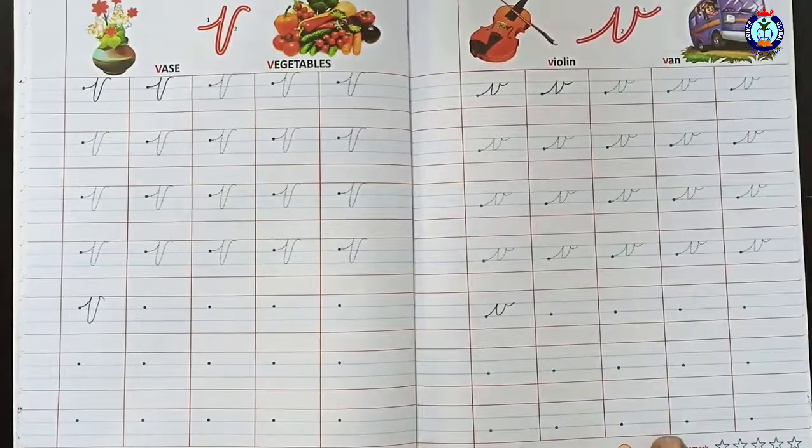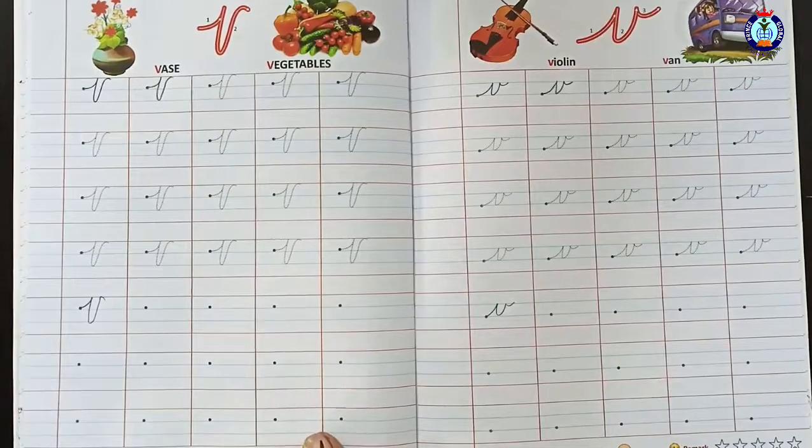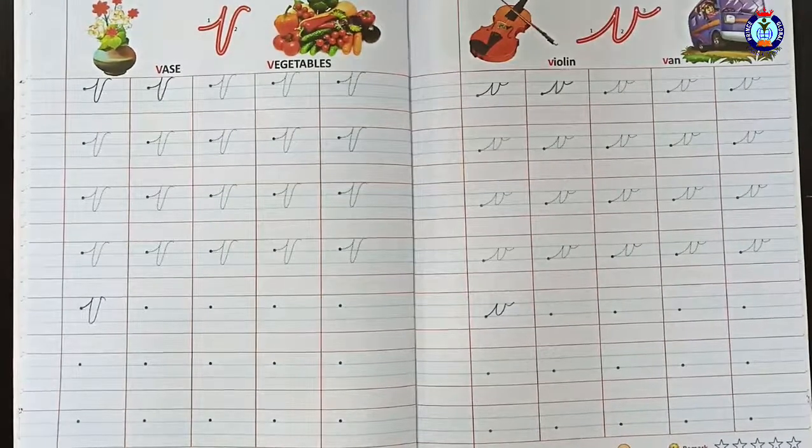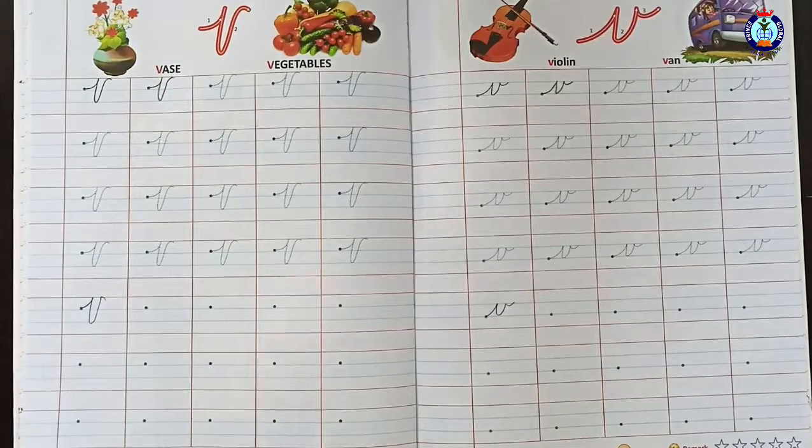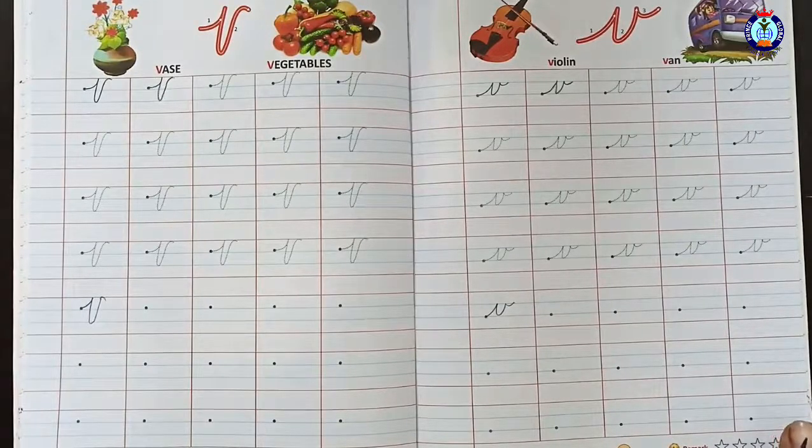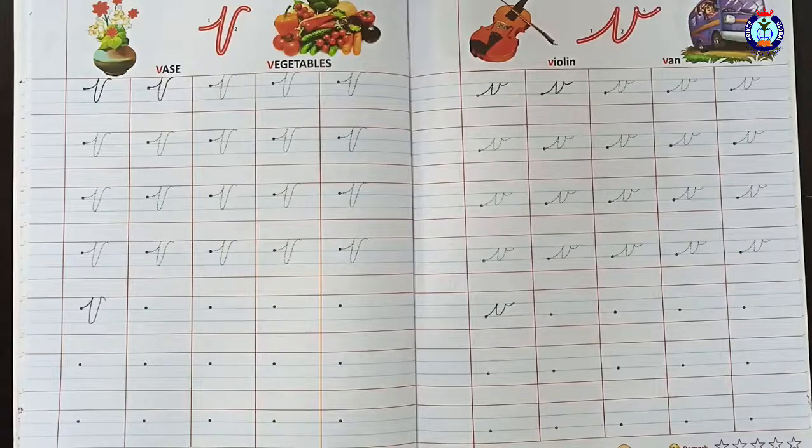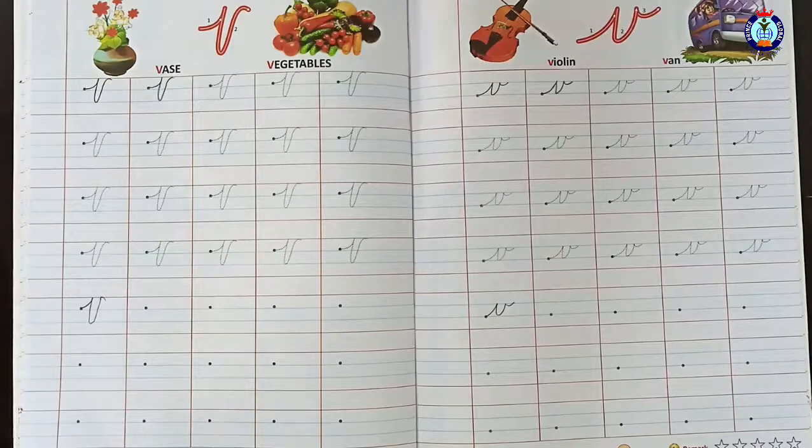Cursive capital V and cursive small letter V. You can write all the lines, dots to dots join, and the lower line blanks you can write. Practice cursive capital letter V and cursive small letter V. Fill in all the lines. Thank you.